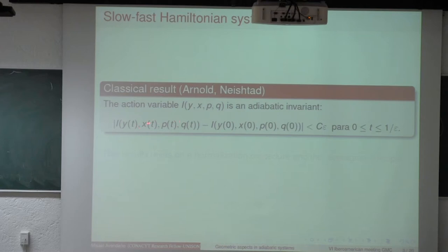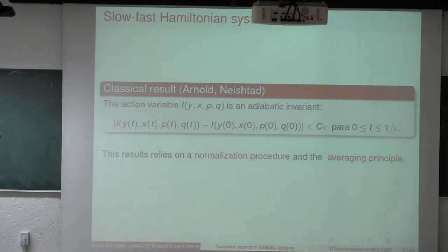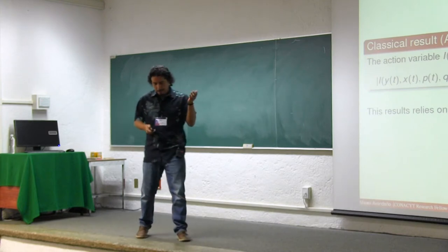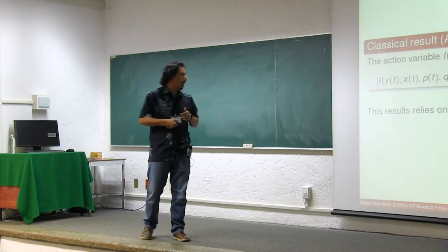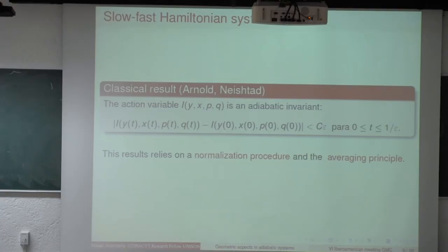For (y(t), x(t), p(t), q(t)) a solution of the Hamiltonian system, we have these estimates for epsilon small enough. This is well known to rely on a normalization procedure where the averaging principle does the work. I want to use the observation mentioned before to find a normalization procedure — this is one of my goals.